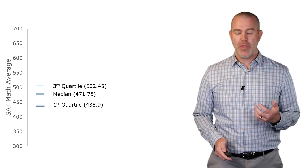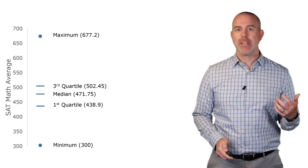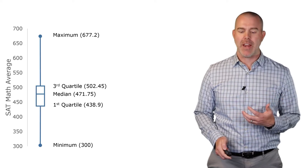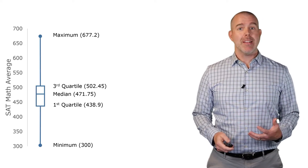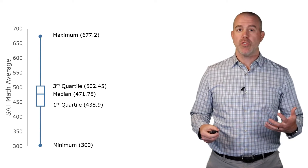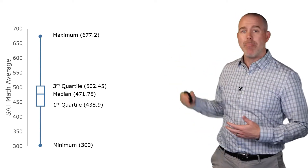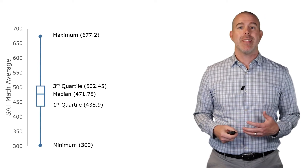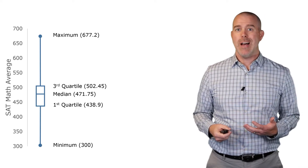Then we have the first quartile, third quartile, the minimum, the maximum. If we put a box around the middle and connect those, we get our box plot. We would expect schools that are good schools — schools we might describe as good schools — to be near the top of that scale because they have a high average SAT math score.